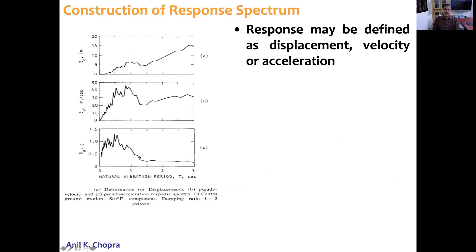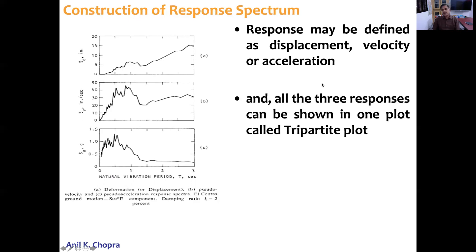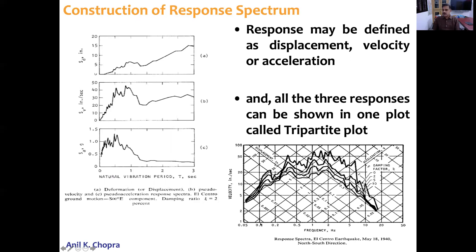The response may be plotted separately as spectral displacement, pseudo-spectral velocity, or pseudo-spectral acceleration. All three response curves can be plotted together on a tripartite graph, where the horizontal axis is natural frequency and the vertical axis is velocity. On this log-scale plot, lines inclined at 45 degrees from each side represent displacement and acceleration respectively, so drawing a perpendicular from any point on the curve to each axis gives all three quantities simultaneously.